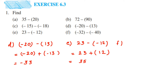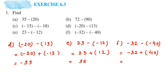The last one is minus 32 minus (minus 40). The first integer remains minus 32. Instead of subtraction, we add the additive inverse of minus 40, which is 40. So it becomes minus 32 plus 40. The integers have different signs, so we subtract: 40 minus 32 equals 8. The greater number is 40, whose sign is positive, so the answer is plus 8, or simply 8.